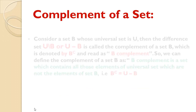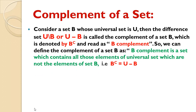Complement of a set — Definition: Consider a set B whose Universal Set is U. Then the difference set U - B is called the complement of set B, denoted by B complement (written as B with a small 'c' above). B complement is a set which contains all those elements of the Universal Set which are not the elements of set B. That is, B complement = U - B.